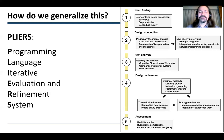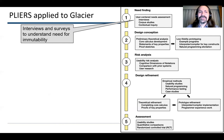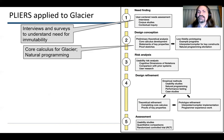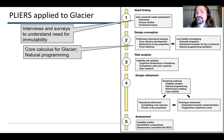So, how do we generalize this technique? Michael came up with an approach that captures what we did in our research — it's called Pliers: Programming Language Iterative Evaluation and Refinement System. We started out with interviews and surveys to do need-finding: to understand the need for immutability and figure out how to fulfill that need. Then there's design conception, which involved playing with formal systems — we had a core calculus for Glacier. We did some natural programming, which is a kind of low-fidelity prototyping where we ask users how they would like to write a declaration that a data structure is immutable.